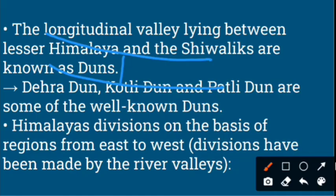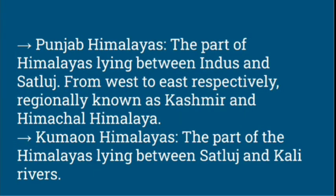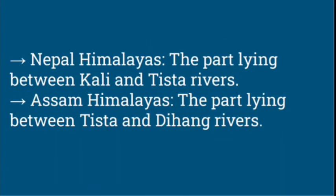The Himalayas are also divided on the basis of region from west to east, separated by river valleys. The part between the Indus and Sutlej rivers is known as the Punjab Himalayas, regionally called Kashmir and Himachal Himalayas. Next is the Kumaon Himalayas between the Sutlej and Kali rivers. Then Nepal Himalayas between the Kali and Tista rivers. And the Assam Himalayas between the Tista and Dihang rivers.